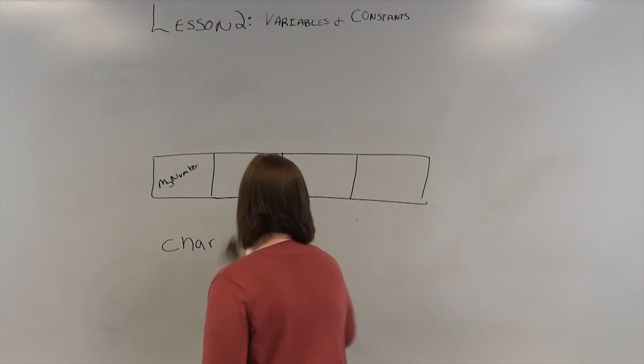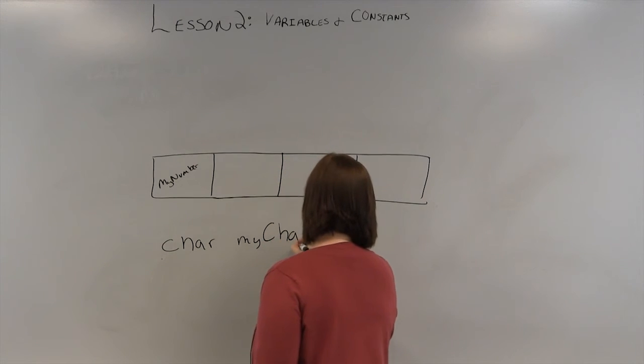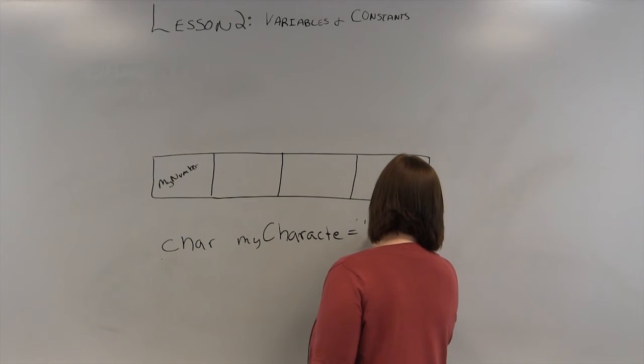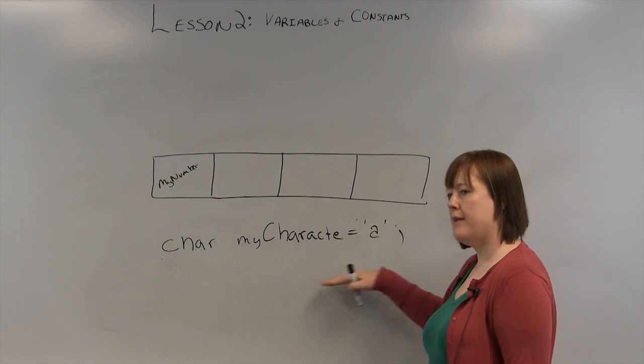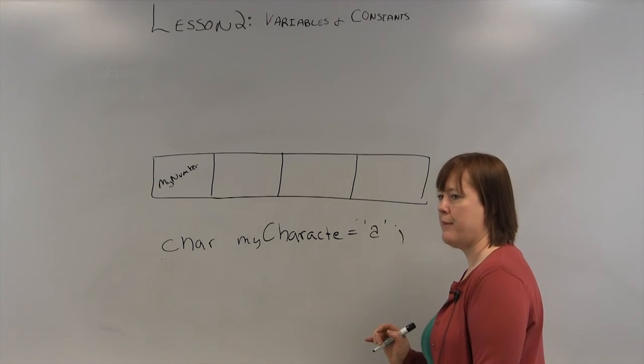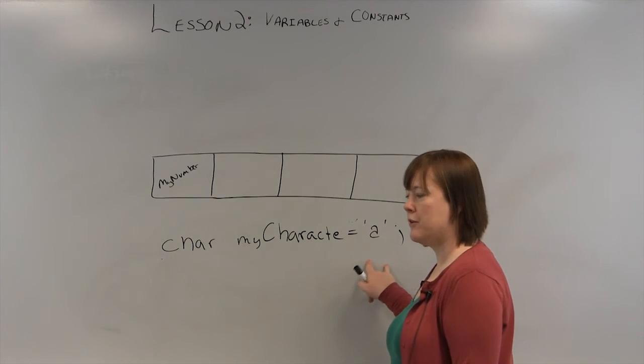If we were going to use this as a variable, it would say, my character. And you would assign equals A. And normally, you end sentences in English with a period. You end sentences in programming in many languages with a semicolon. Not always, but commonly. So, character is a single character.